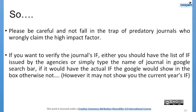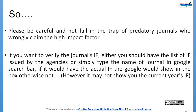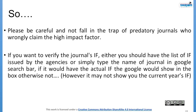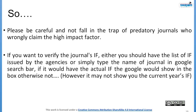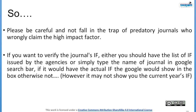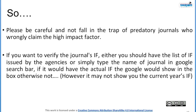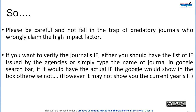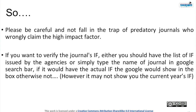If you want to verify a journal's impact factor, either refer to the list of impact factors issued by agencies, or simply type the journal name in Google's search bar. If it has an actual impact factor, Google will show it in the knowledge box — otherwise not. However, it may not show the current year's impact factor, which doesn't matter.